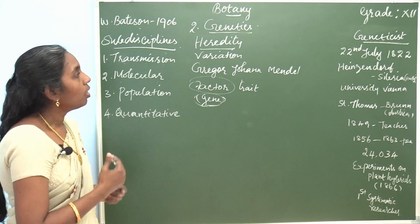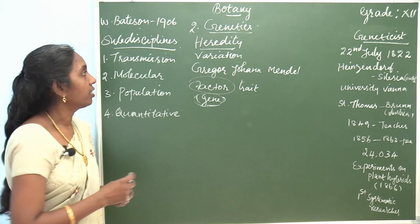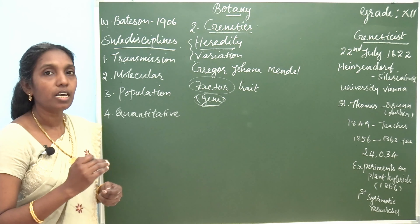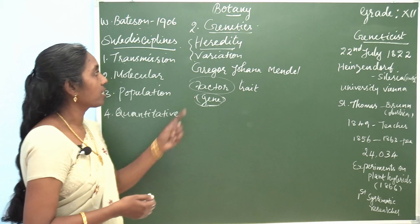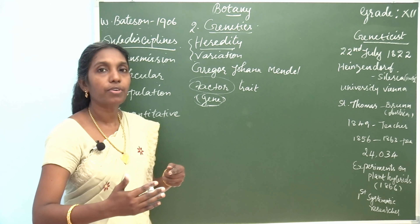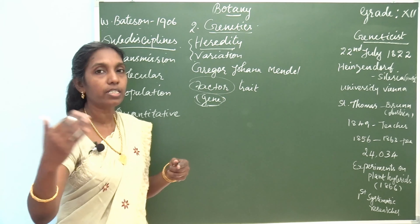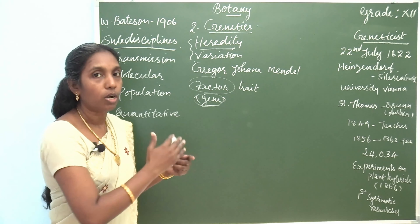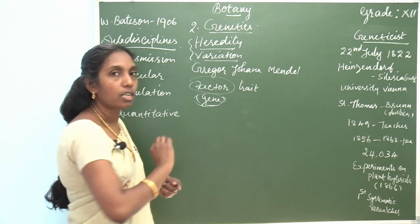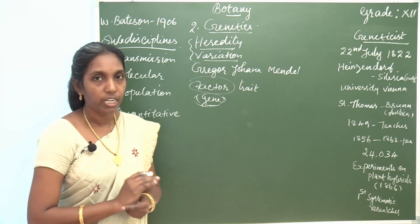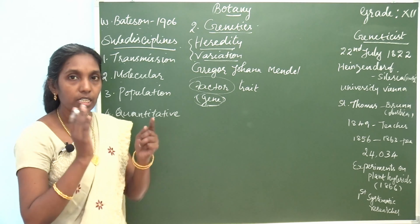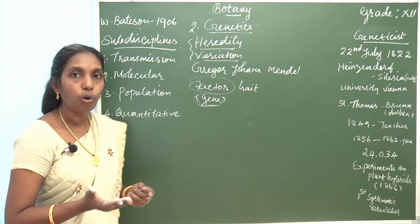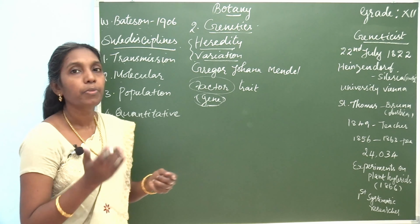Now, what is heredity and variation? Heredity refers to the transmission of characters from generation after generation — from parent to offspring. The characters that are transmitted are called hereditary characters. Variation refers to differences found among individuals within the same natural population or species — the differences that exist from individual to individual or species to species.